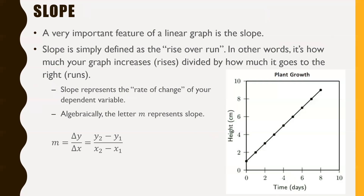Now this is the real meat and potatoes of today — we've got to talk about slope. A very important feature of a linear graph is the slope. The slope is just basically how much it goes up for how much it goes over. A simpler way of putting that is rise over run. If you can figure out how much your graph goes up by and divide it by how much it runs — how much it goes over — that number you get is your slope.